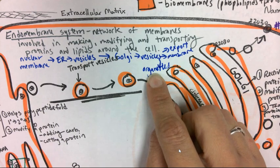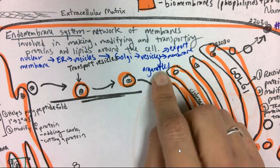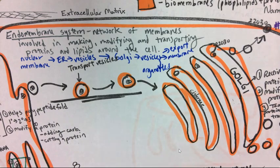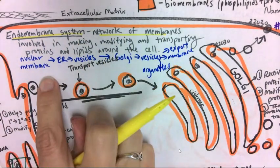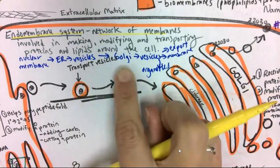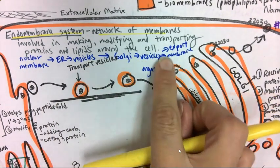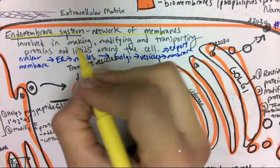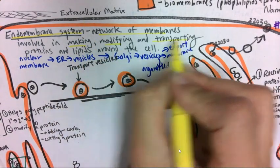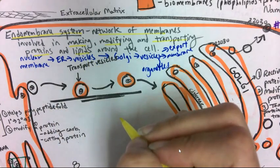This is a video review of the endomembrane system. The endomembrane system is a network of membranes, including the nuclear membrane, ER, vesicles, Golgi, more vesicles, and membranes or organelle membranes, cell membrane or organelle membranes, that are involved in making, modifying, and transporting proteins and lipids around the cell.